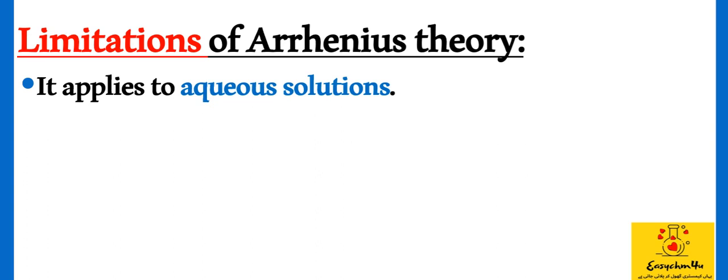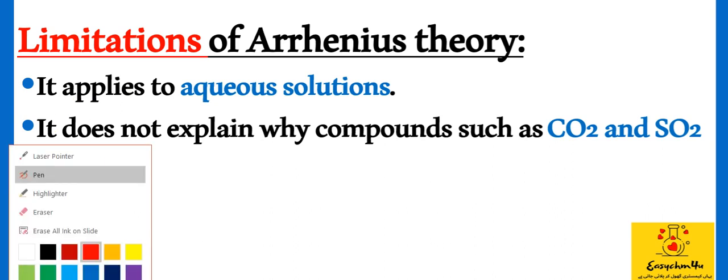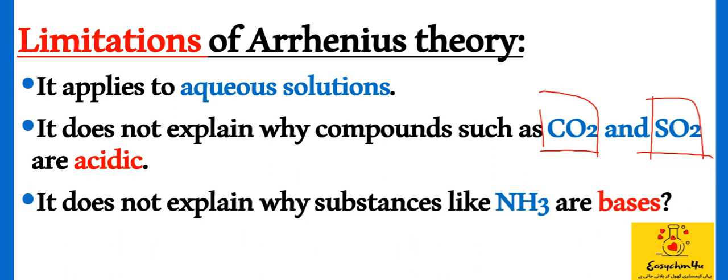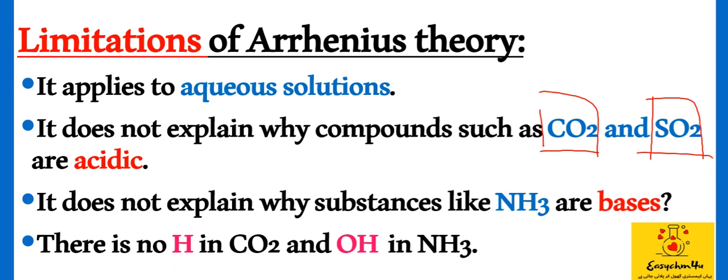And then it will produce hydroxyl or hydrogen ions. That's why substances like ammonia cannot be classified as bases. Here in ammonia's structure, we don't see hydroxyl, meaning OH. Because of this, Arrhenius theory could not be applied to all acids and bases.